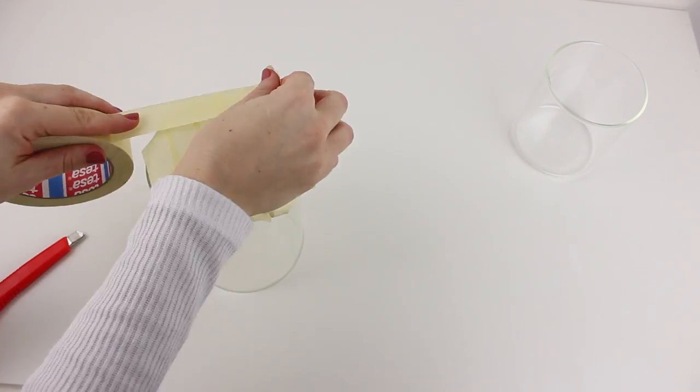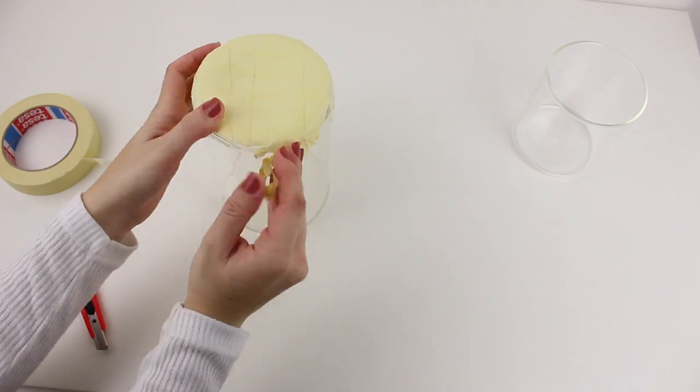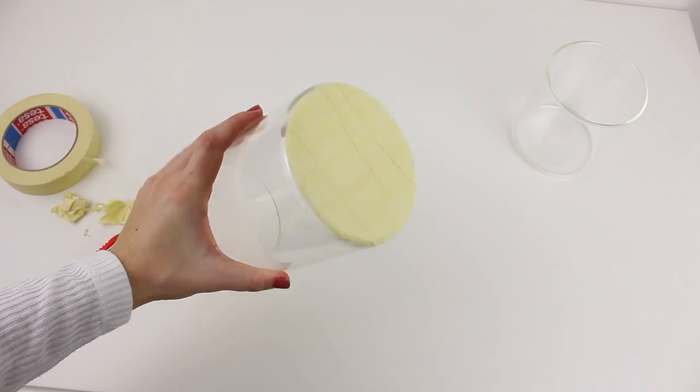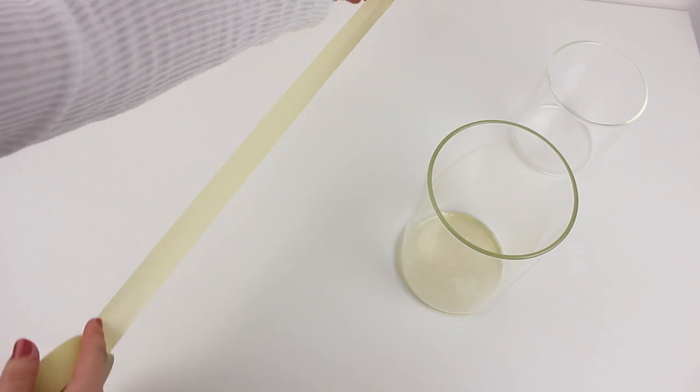So you should cover the whole surface with tape. And don't worry too much with the end bits, because you can then cut them off with a cutter by making the shape of the bottom surface.